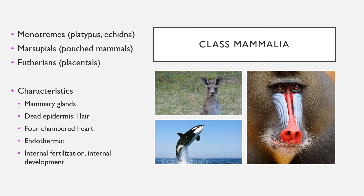All mammals share these characteristics: they all have mammary glands which produce milk for their young. We have dead epidermis such as hair that is used for insulation — that hair traps warm air close to the body and provides a very dense coat. We have a four-chambered heart with two atria and two ventricles, and then internal fertilization and internal development.